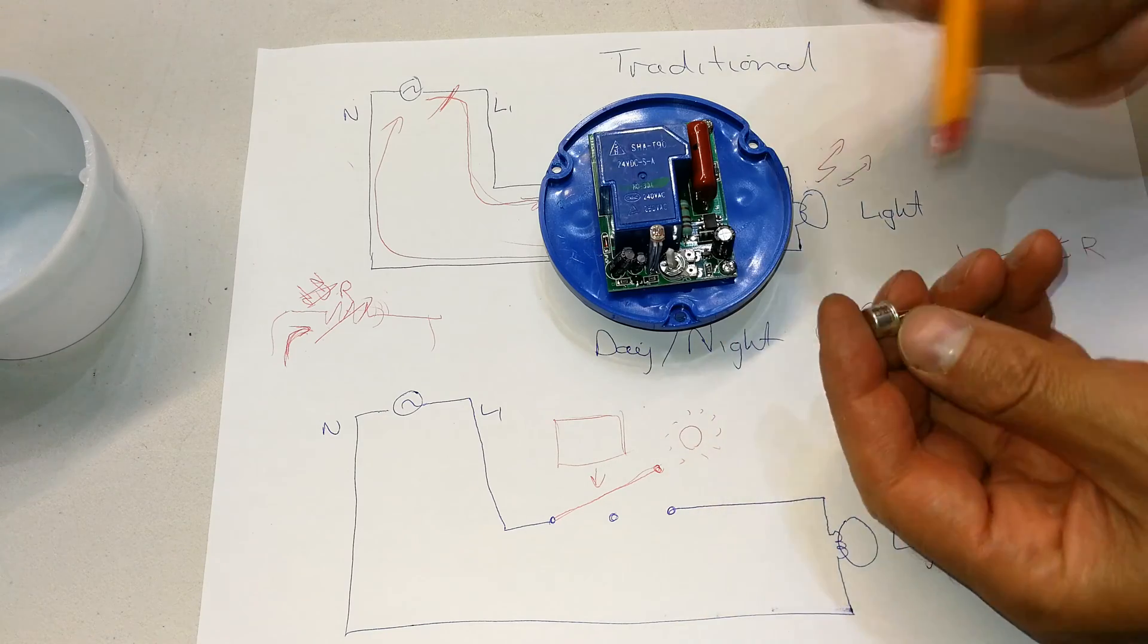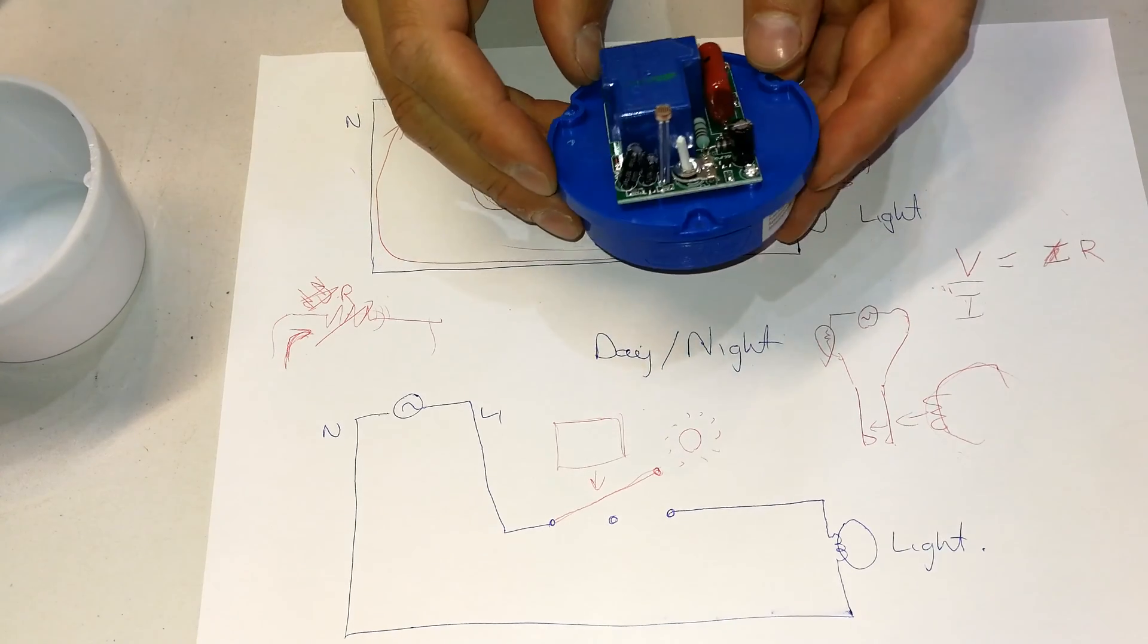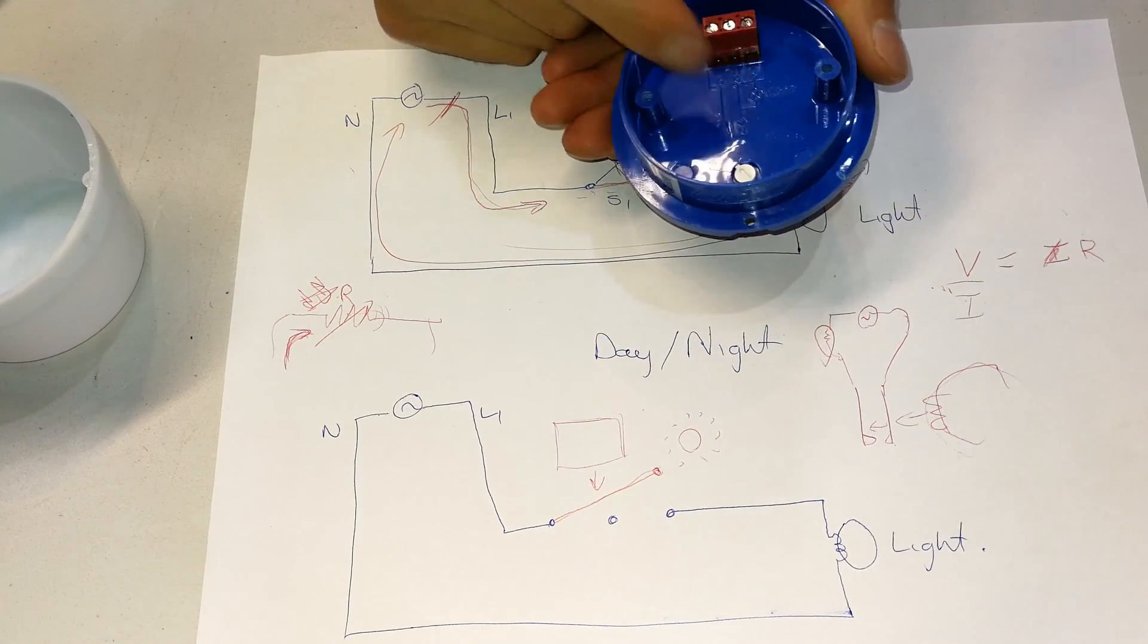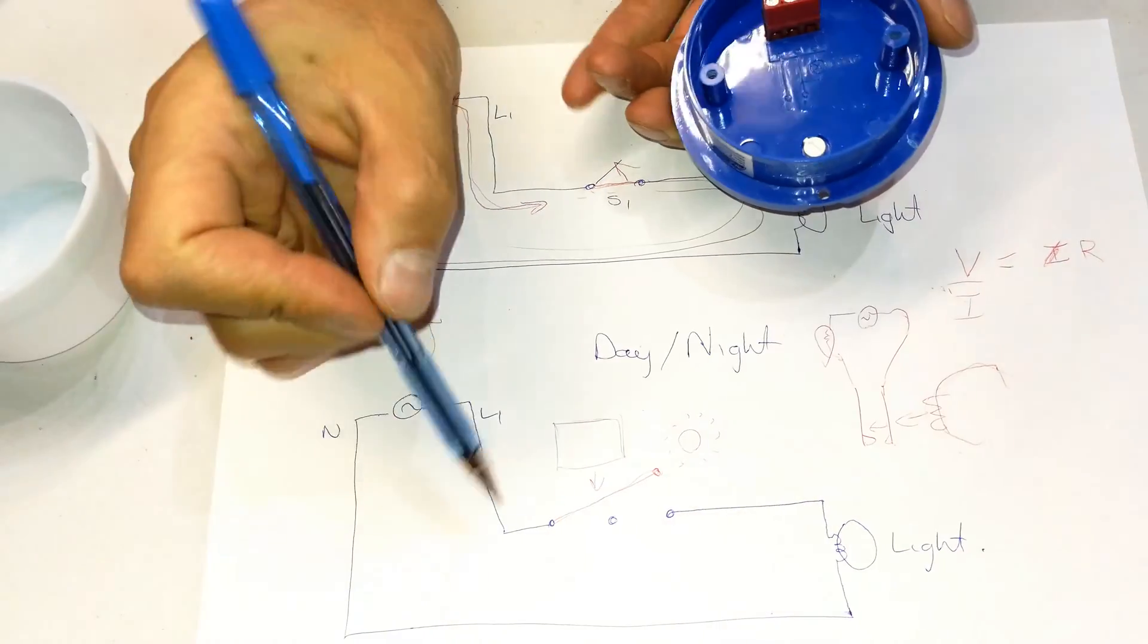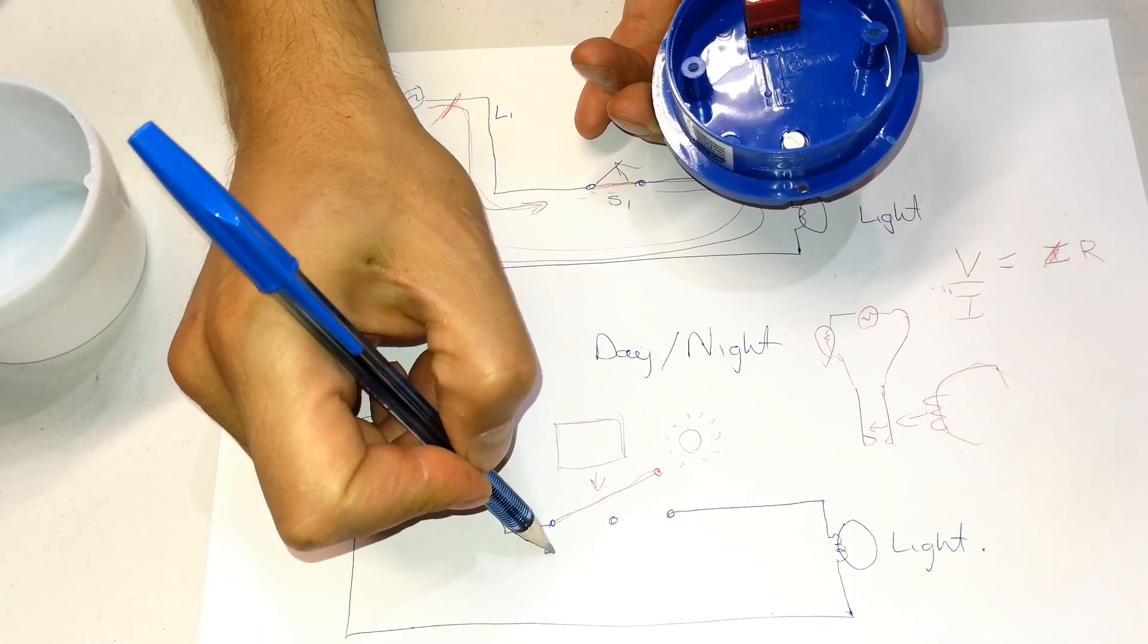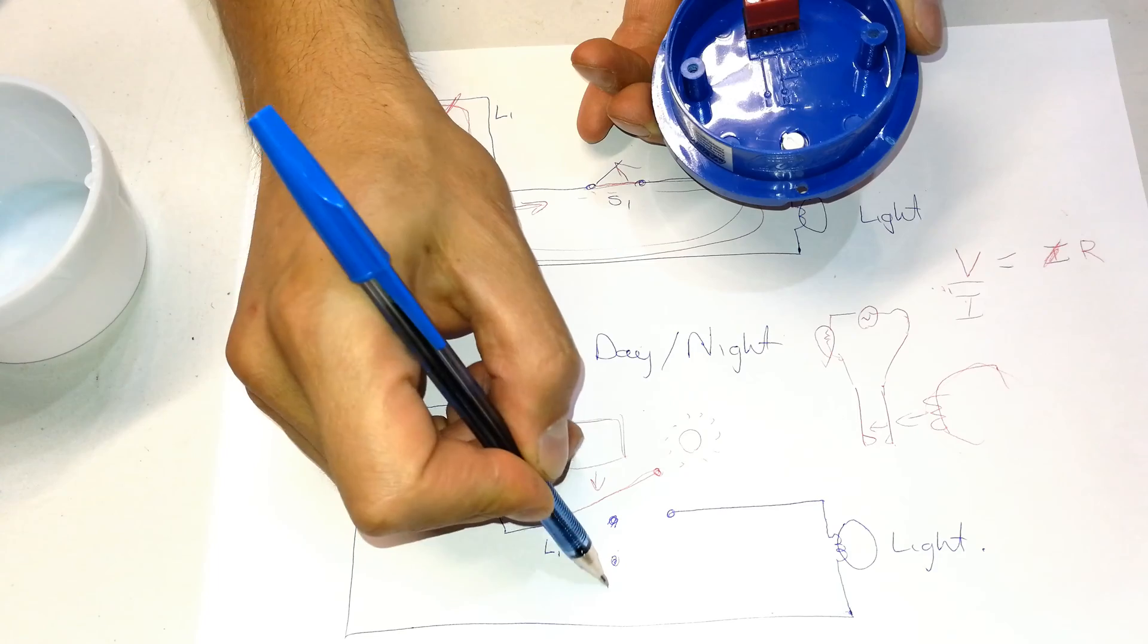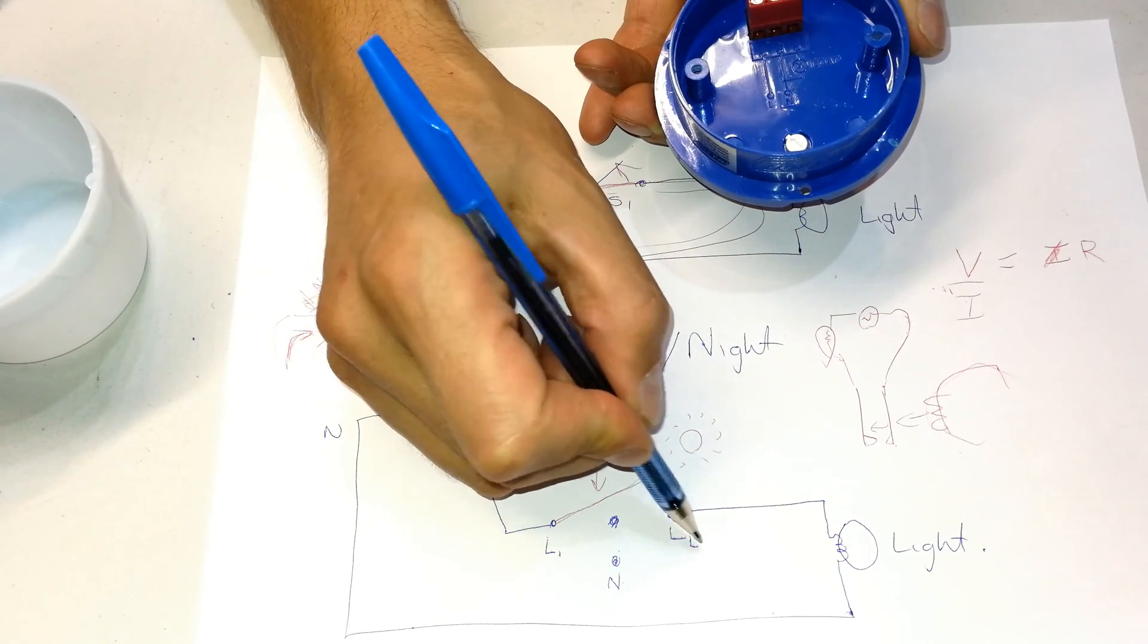Okay, so you've seen inside the day-night switch, and you can see that there are three terminals here. It says live, neutral, and then load. So coming back to our diagram, you can see I've got a live, then we have to have a neutral. Now I'm going to move that—and then a live. And you see, this one says live for the load.